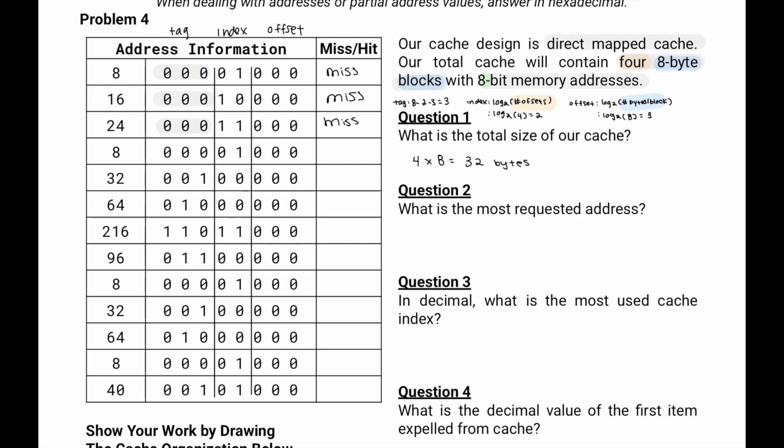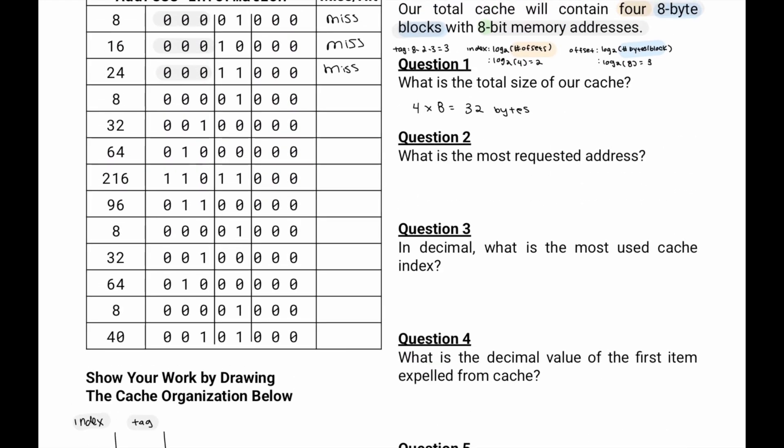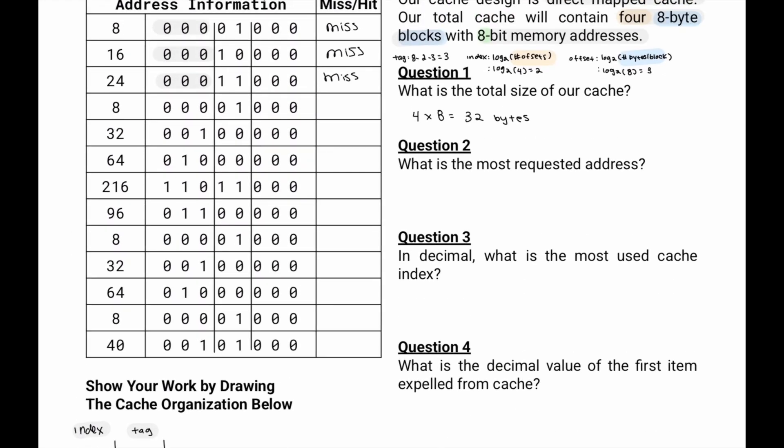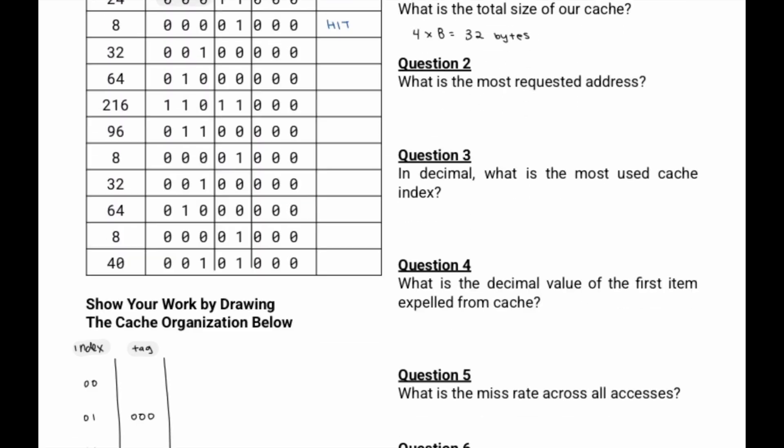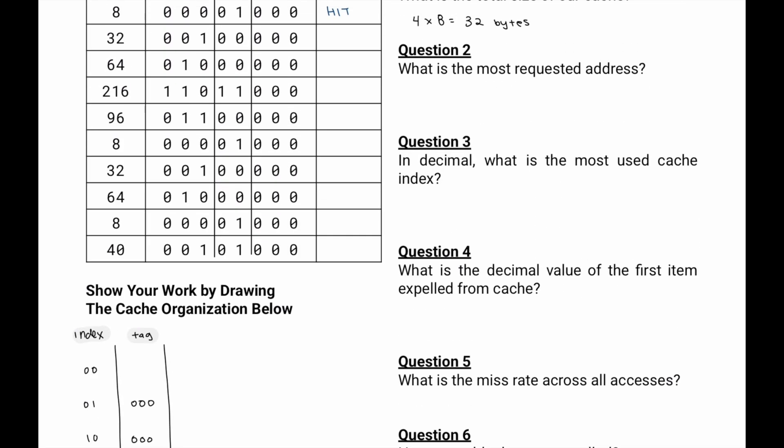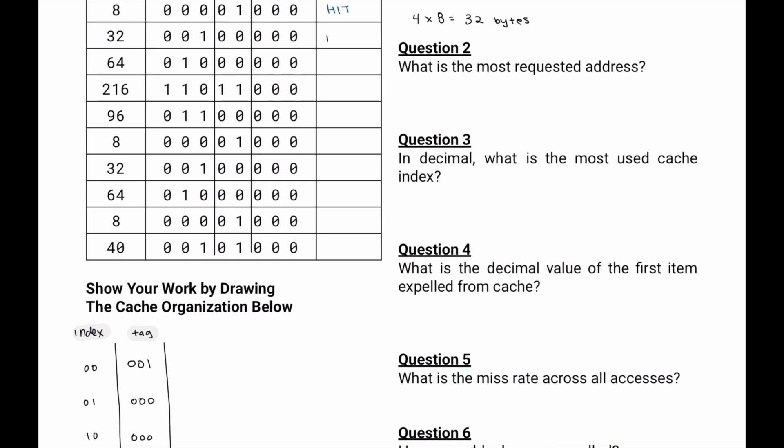At 8, we're going to go to 01. We'll check if the tag matches 000. It does match. So that will actually be a hit. At 32, at index 00, we'll check for 001. It's not there. So that'll be a miss, and then we'll place the tag 001 there.